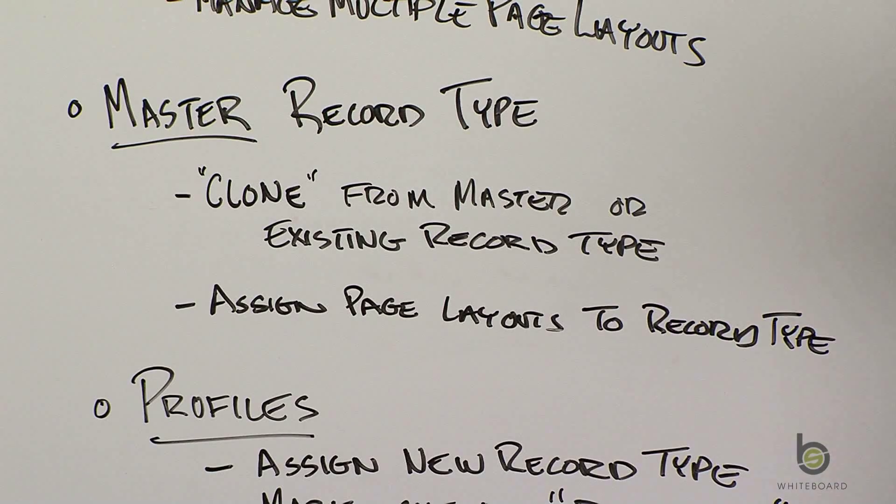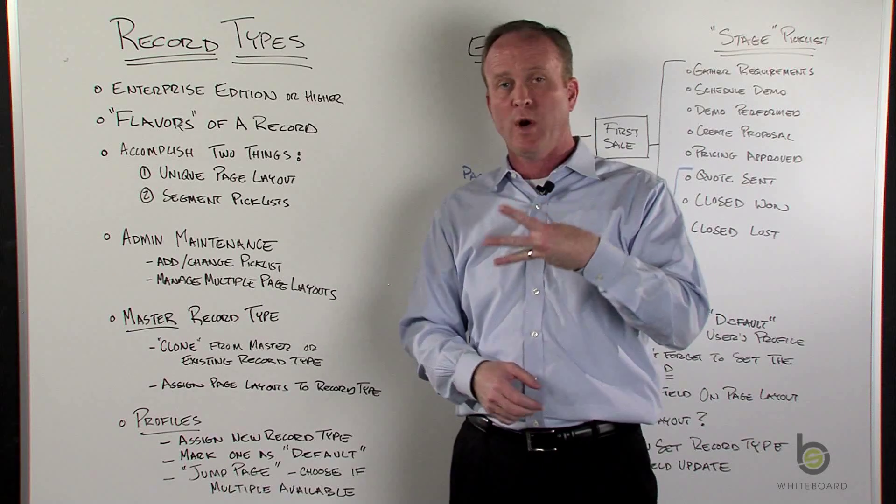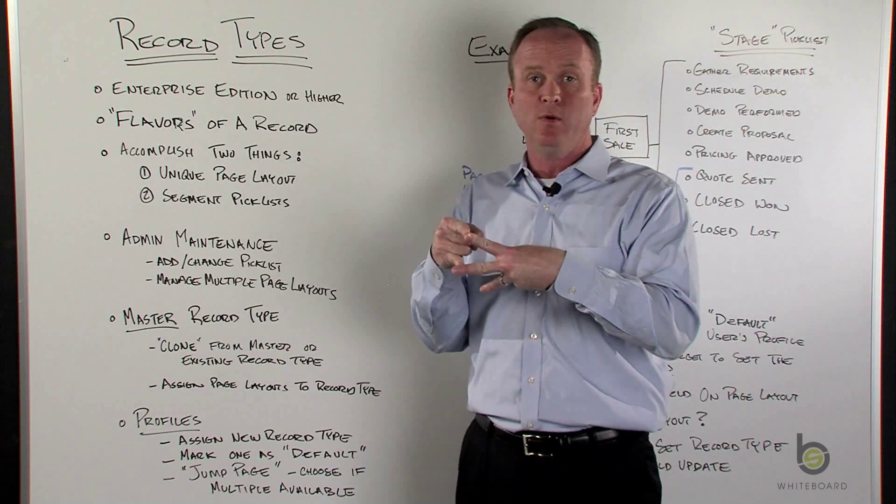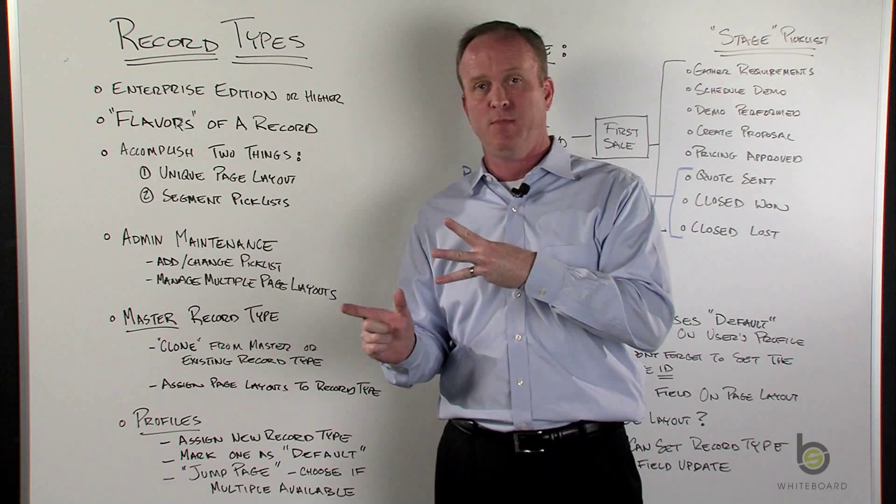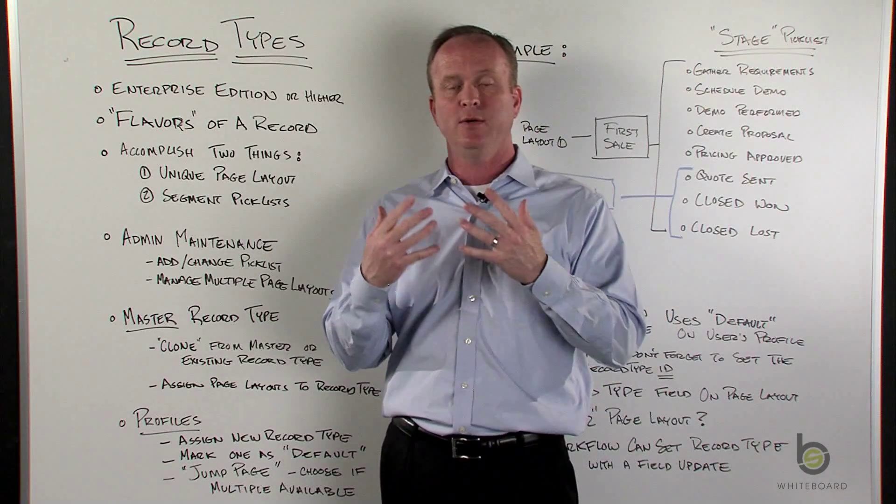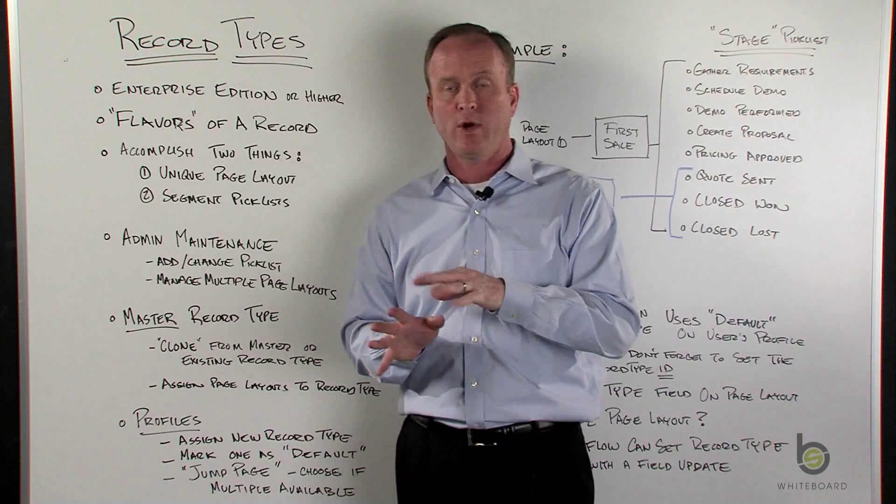And then with those record types, that division or split allows you to assign a different page layout. So if you have three different record types, you might have two that use the same page layout. The third one can have a unique page layout. So it allows you not only to segment your picklist values, but you can also split your page layouts and assign them accordingly.